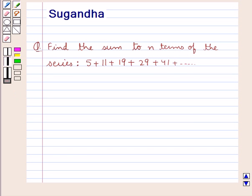Hello and welcome to the session. In this session we discuss the following question: find the sum to n terms of the series 5 plus 11 plus 19 plus 29 plus 41 and so on.